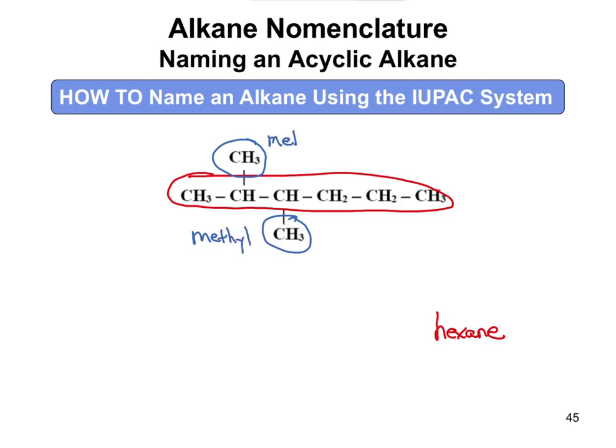Now we have to number it. We can number from left to right or from right to left. Going left to right: one, two, three, four, five, six — our first substituent would be on carbon two. Going the other way, our first substituent would be on carbon four. We don't want that because two is less than four, so we get rid of those numbers.